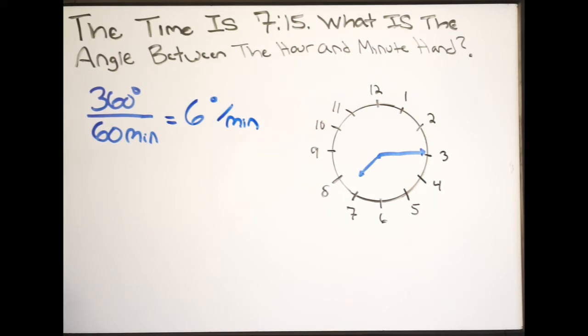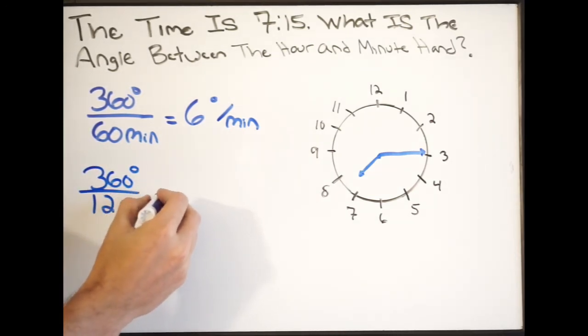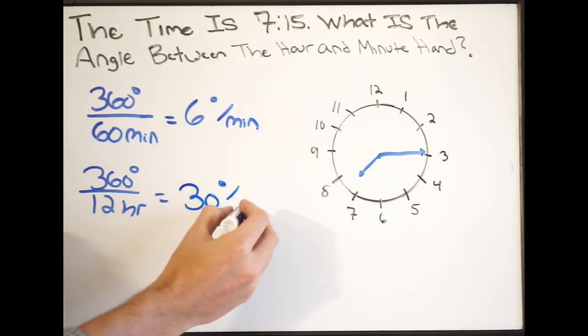Now we want to do the same thing for hours. So if I look here, one full revolution will be 12 hours. So same thing, I'm just going to do it like this now. I'm going to do 360 degrees over 12 hours. And if I do this out here, I'm going to get 30. So I get 30 degrees per hour.